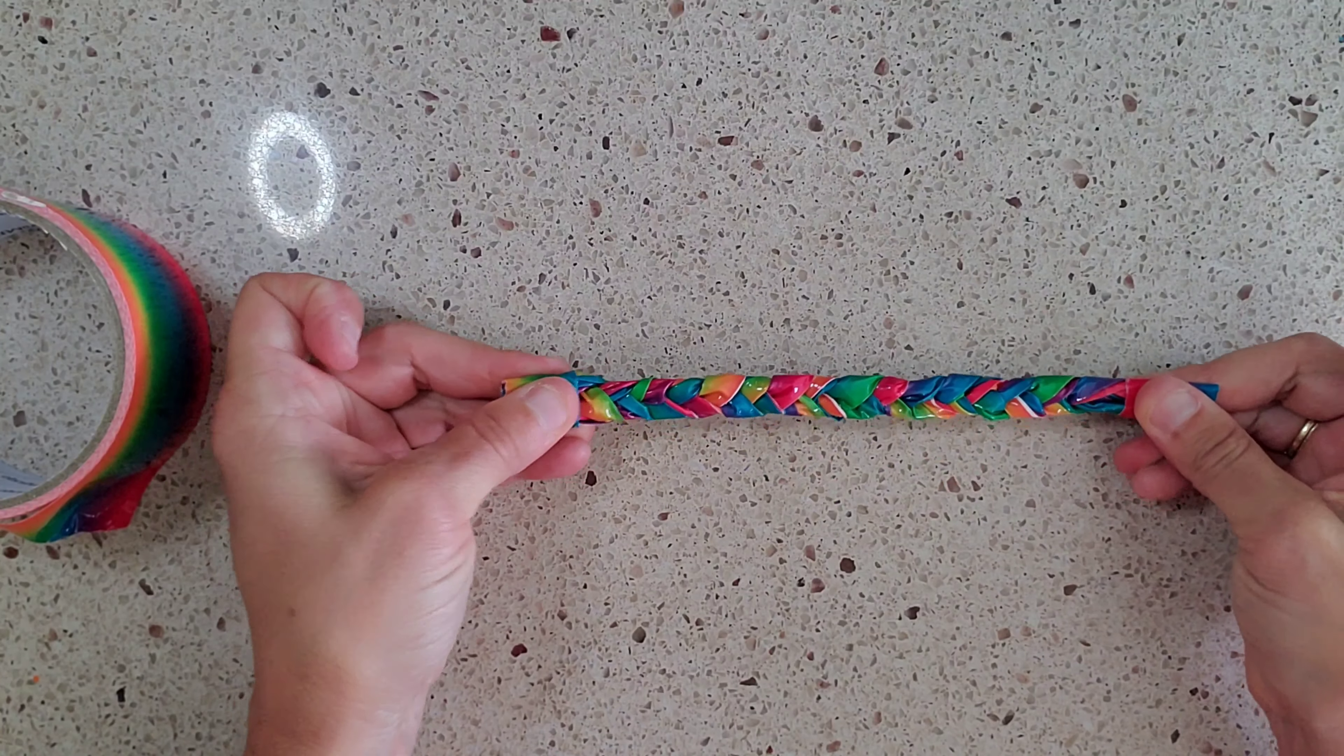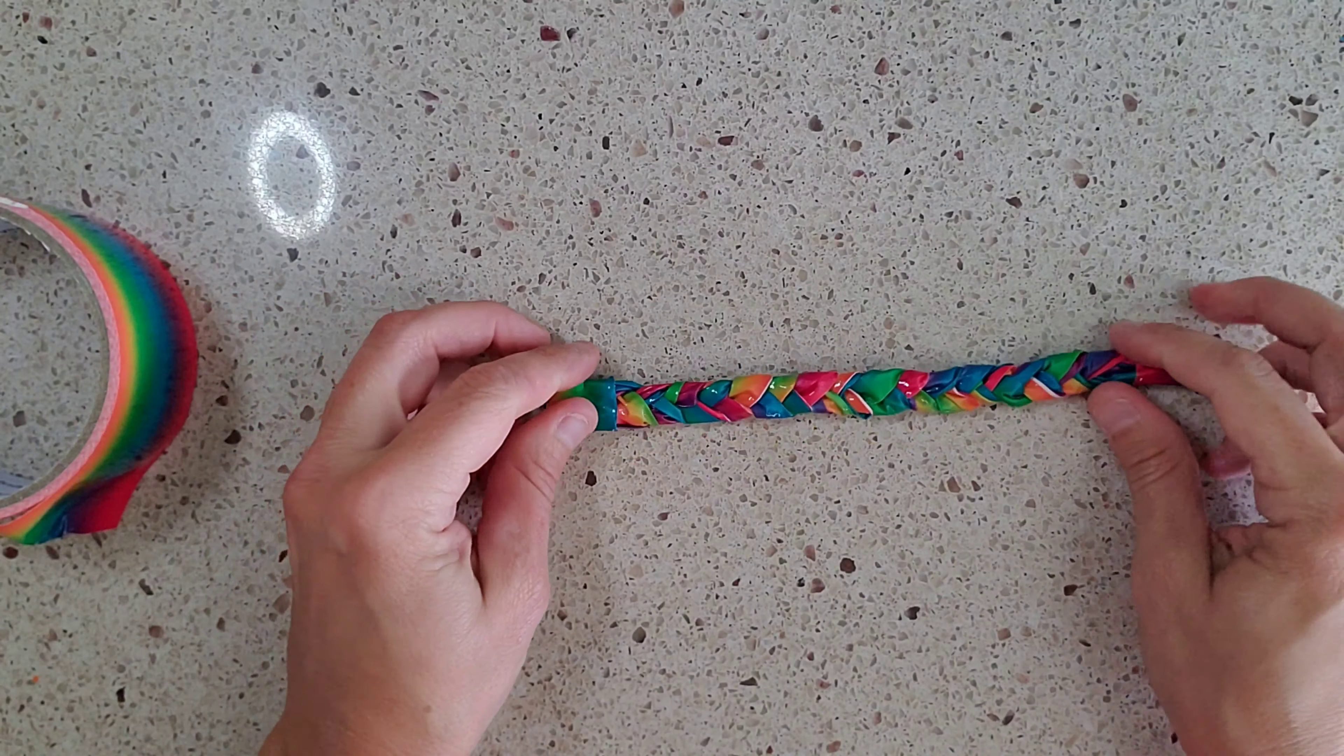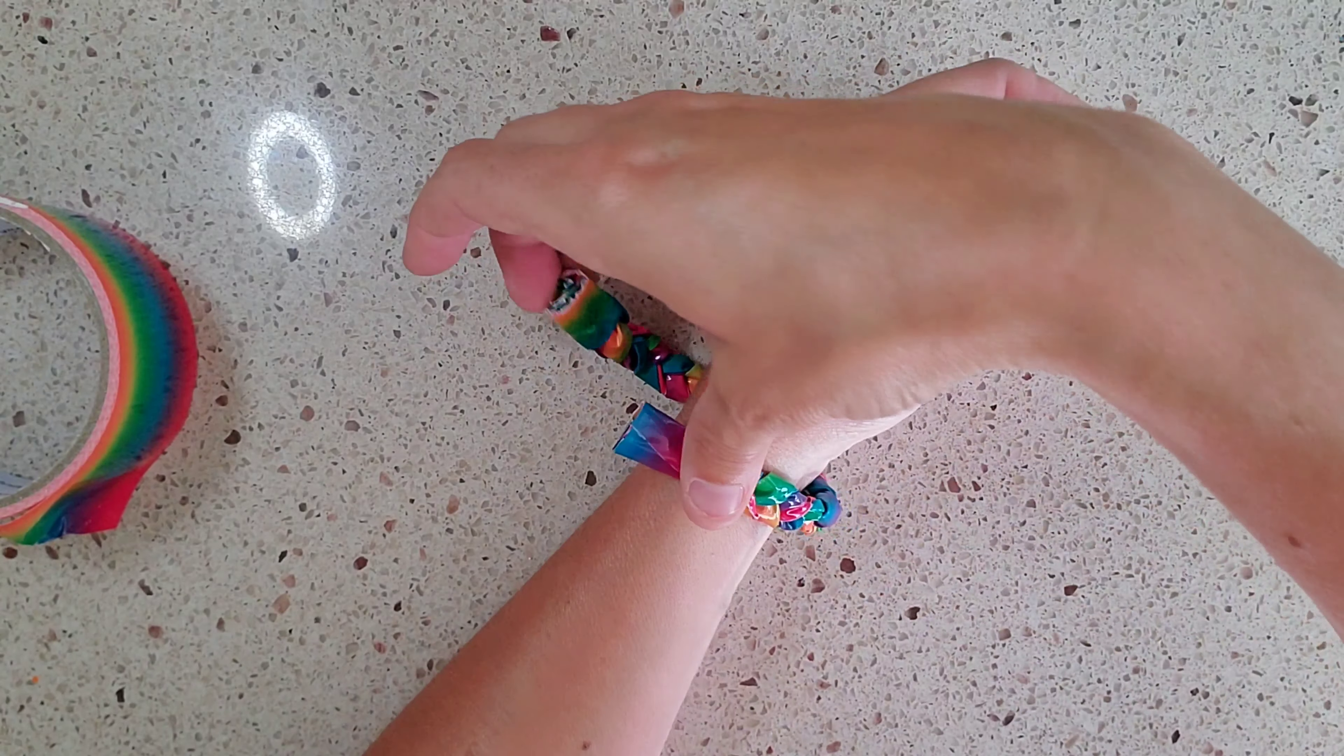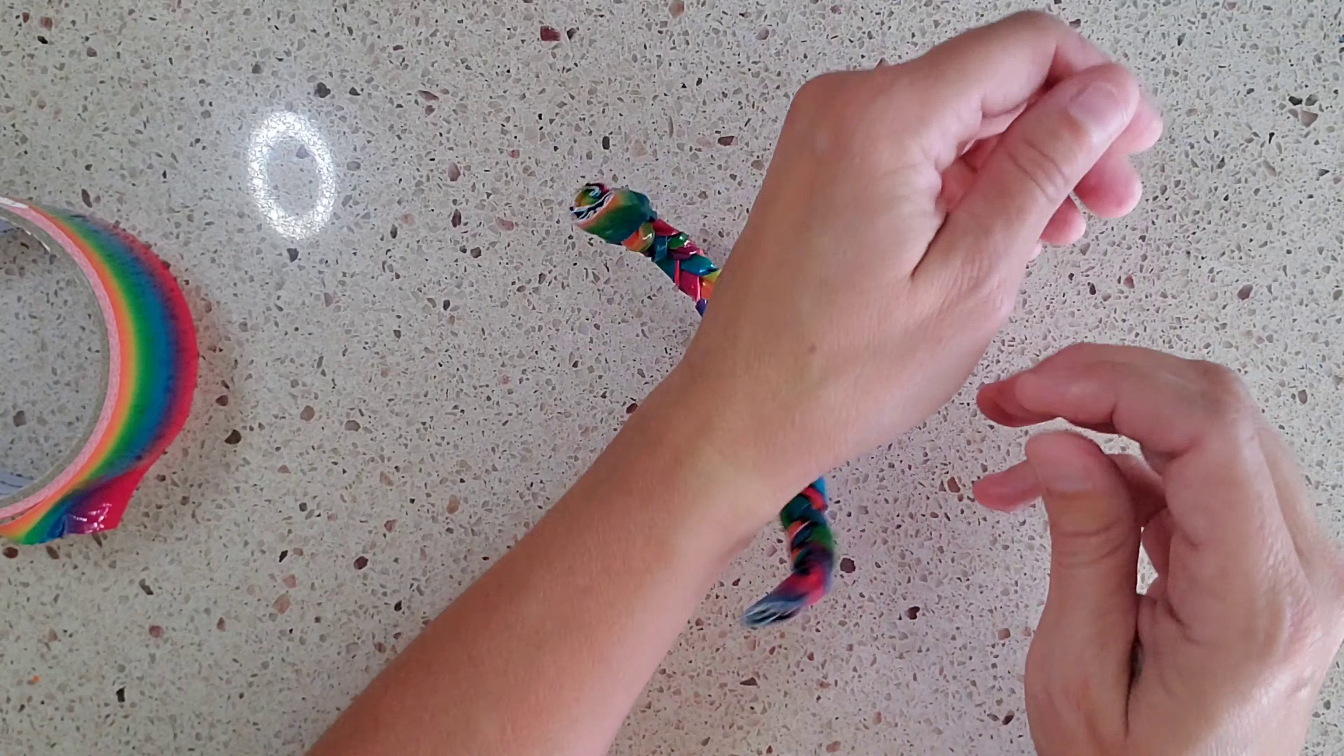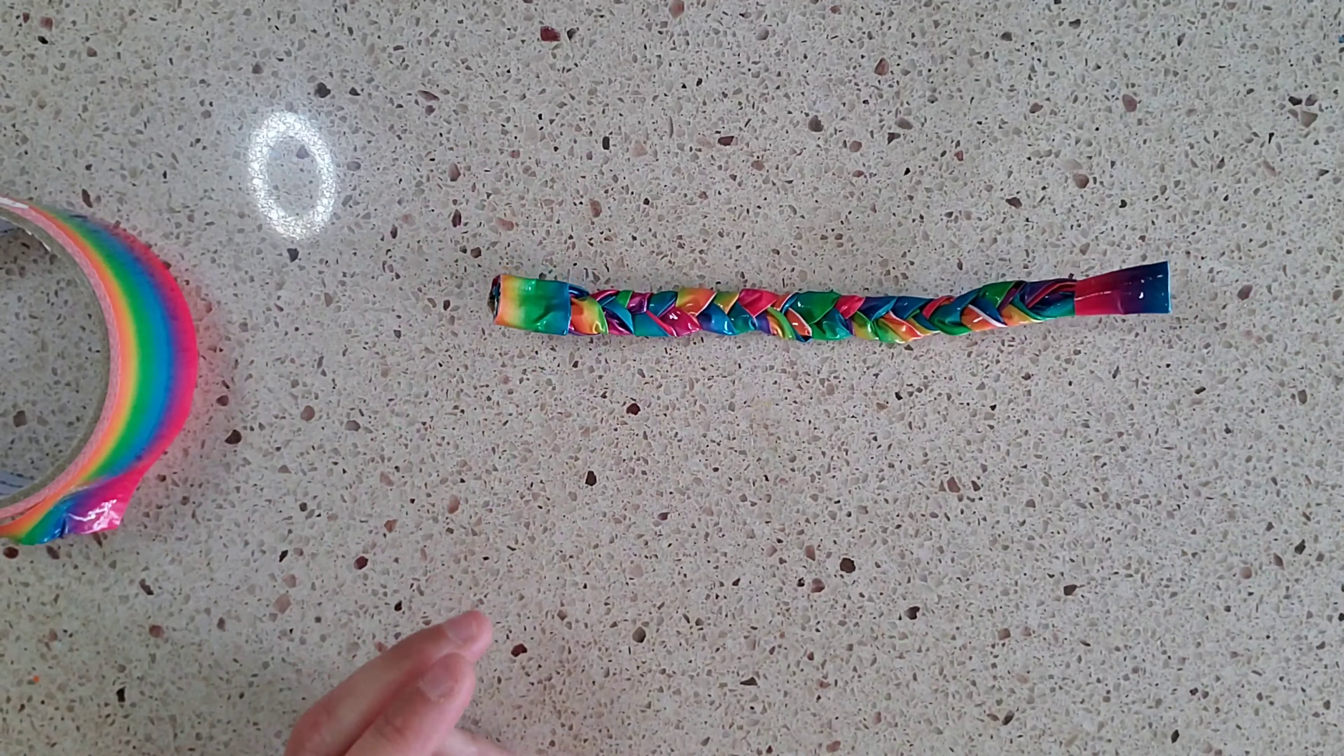With two ends and you can see there is some stretch in there and then this is your bracelet. So now you are at the point where you are like now what, I want to be able to attach it. So now that you have this finished you are going to get one more piece of duct tape.